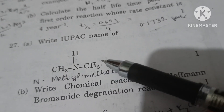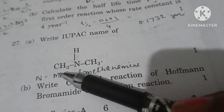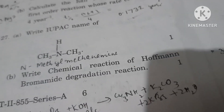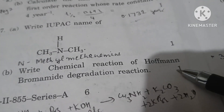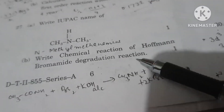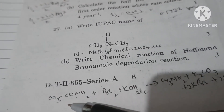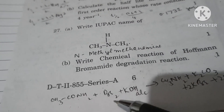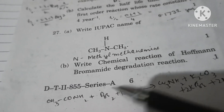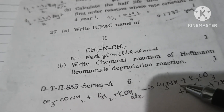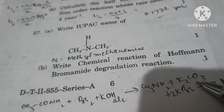Write the IUPAC name of CH₃NHCH₃: this is a secondary amine with a methyl group substituted on nitrogen, so the IUPAC name is N-methylmethanamine. Write the chemical reaction for Hoffmann bromide degradation: amide reacted with bromine and alcoholic KOH forms a one-carbon-less amine (methanamine), along with potassium carbonate, potassium bromide, and water.